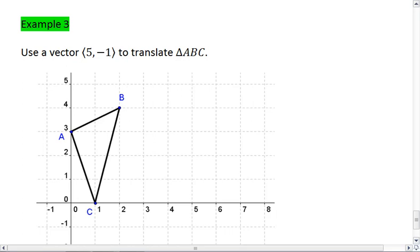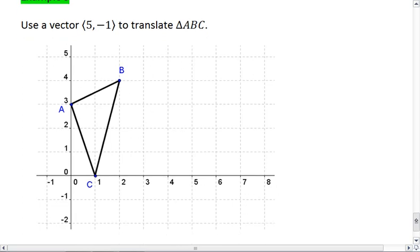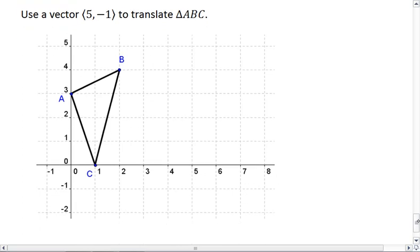Example 3 is the last example I want to look at, and I want you to use the vector (5, -1) to translate triangle ABC as given below. Try to figure this one out on your own first, pause the video, and resume when you're ready to see the solution.